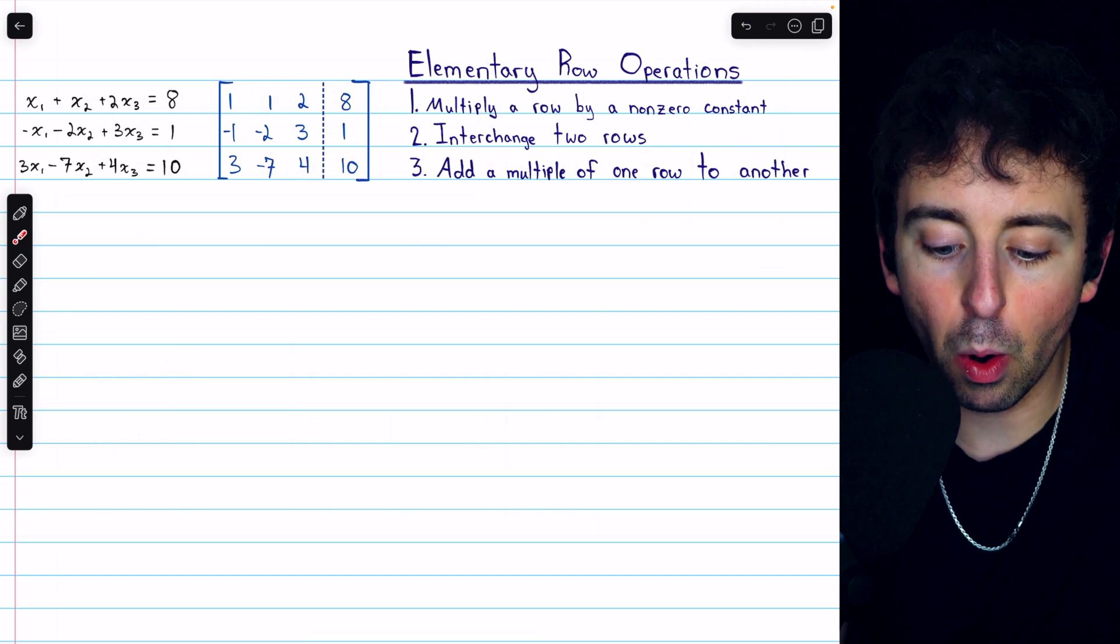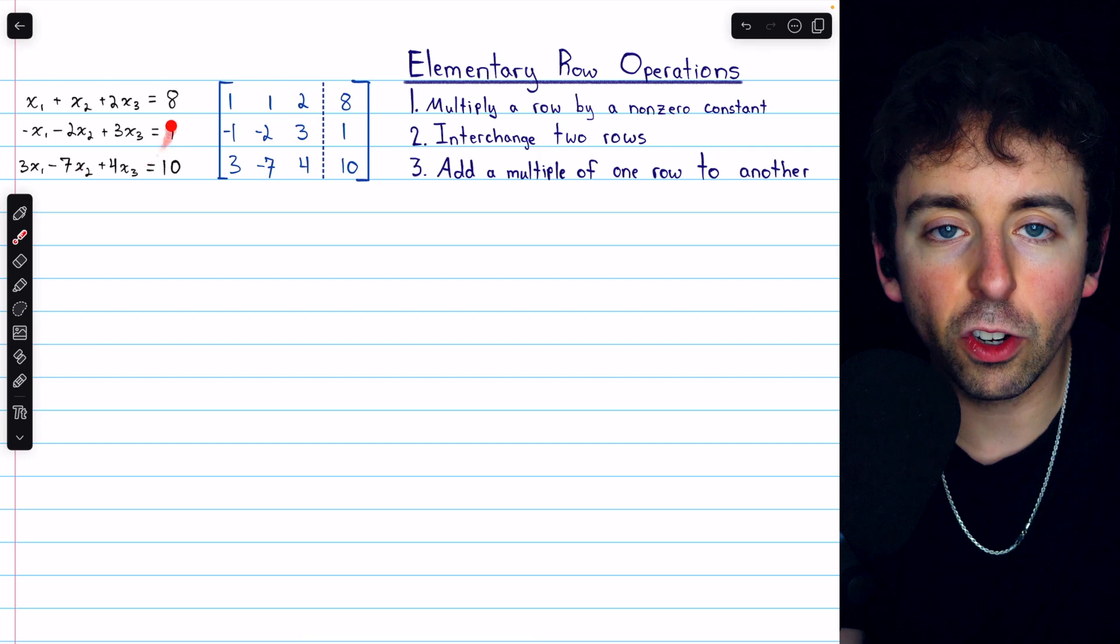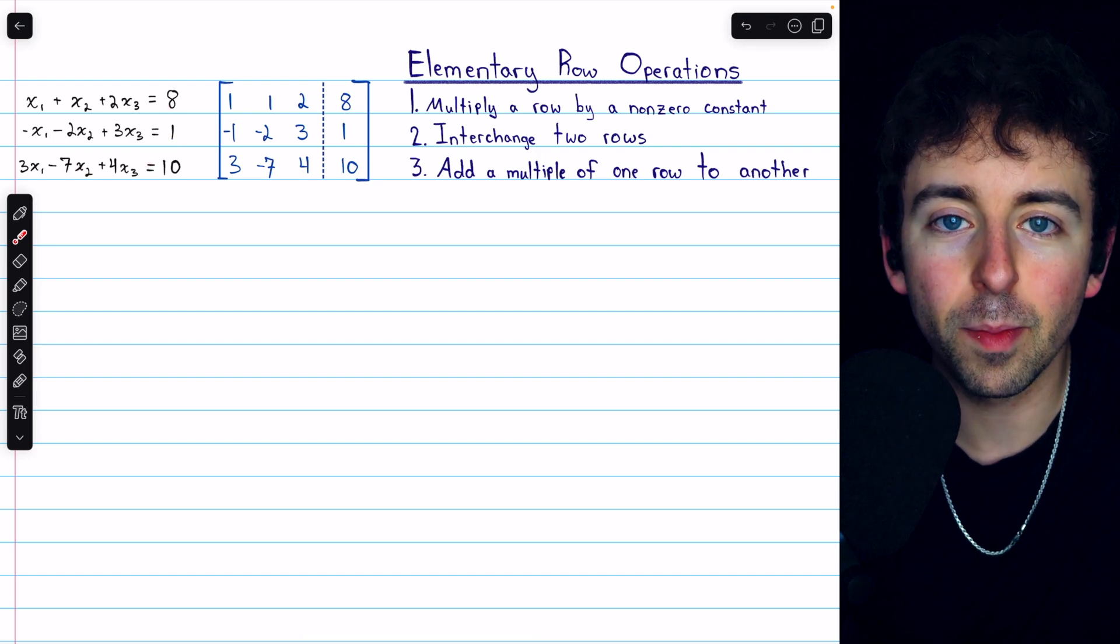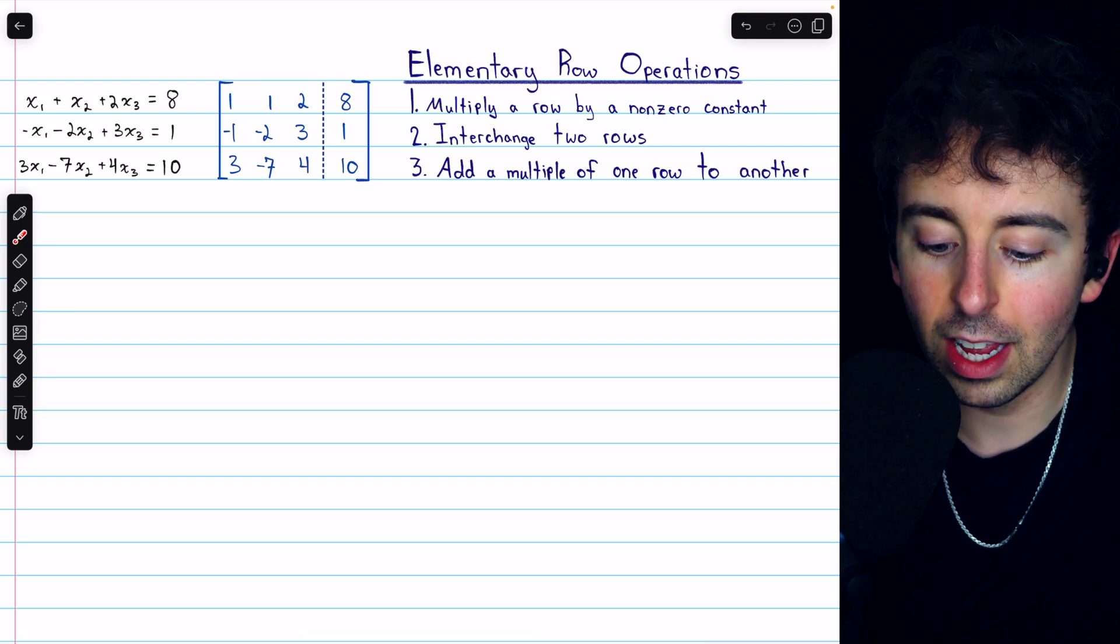Here are the three elementary row operations. They are all just things that we might do with the equations if we were trying to solve the system, but put in terms of the rows since we're doing this with matrices.